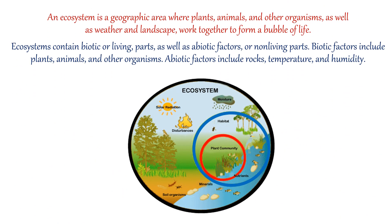An ecosystem is a geographic area where plants, animals and other organisms as well as weather and landscape work together to form a bubble of life. Ecosystems contain biotic or living parts as well as abiotic factors or non-living parts. Biotic factors include plants, animals and other organisms. Abiotic factors include rocks, temperature and humidity, etc.